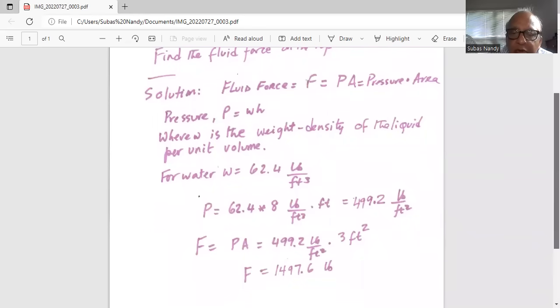So 499.2 pounds per feet squared multiplied by area is multiplied by three feet square, feet square cancel out. So we have force one thousand four hundred and forty seven point six pounds.